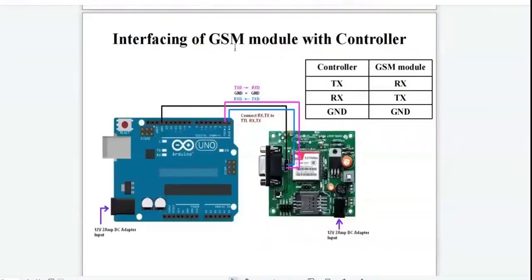A figure shows the interfacing of the GSM module with the controller. Here, only 3 pins are used. The transmit pin of the controller is connected with the receive pin of the GSM module. The receive pin of the controller is connected with the transmit pin of the GSM module. And the ground pin of the controller is connected with the ground pin of the GSM module. The Arduino will have its own 12V 2A DC input, and similarly the GSM module will have its own 12V 2A DC input.